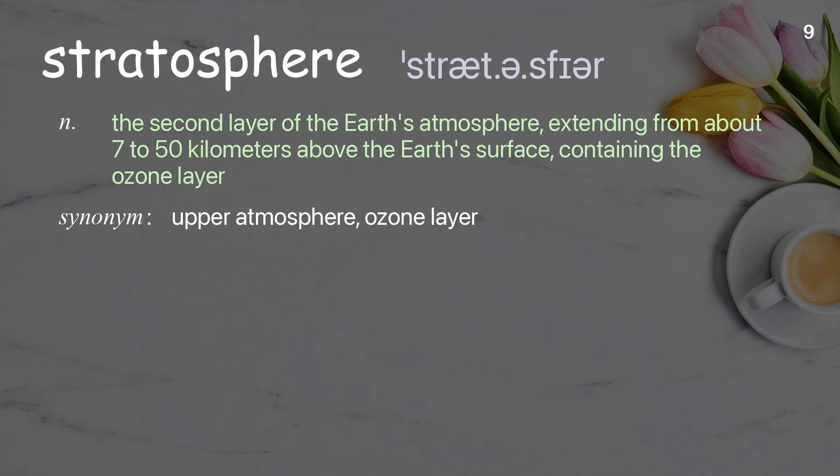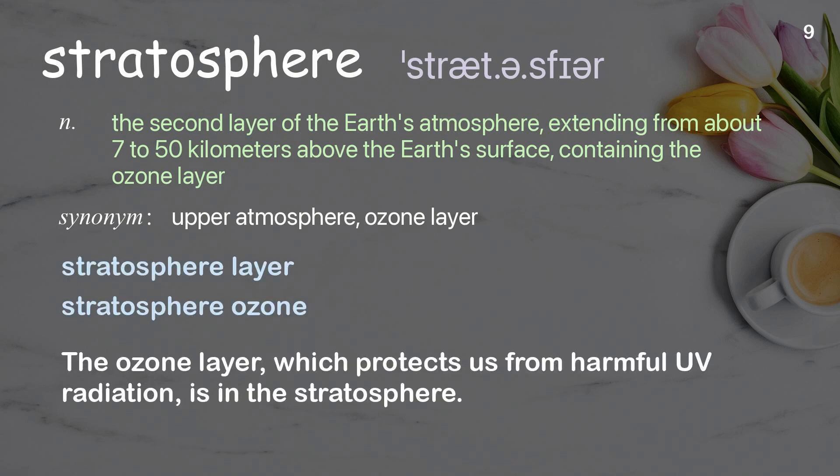Stratosphere: the second layer of the Earth's atmosphere extending from about 7 to 50 kilometers above the Earth's surface, containing the ozone layer. Examples: stratosphere layer, stratosphere ozone. The ozone layer, which protects us from harmful UV radiation, is in the stratosphere.